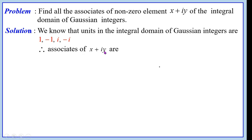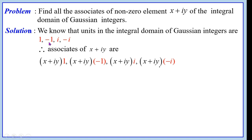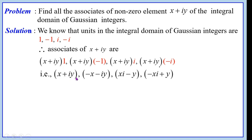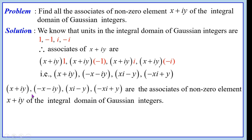Therefore, the associates of x + iy are: (x + iy)·1, (x + iy)·(−1), (x + iy)·i, and (x + iy)·(−i). Now, (x + iy)·i = xi + i²y = xi − y = −y + xi. And (x + iy)·(−i) = −xi − i²y = −xi + y = y − xi. Therefore, the four associates are: x + iy, −x − iy, −y + xi, and y − xi.